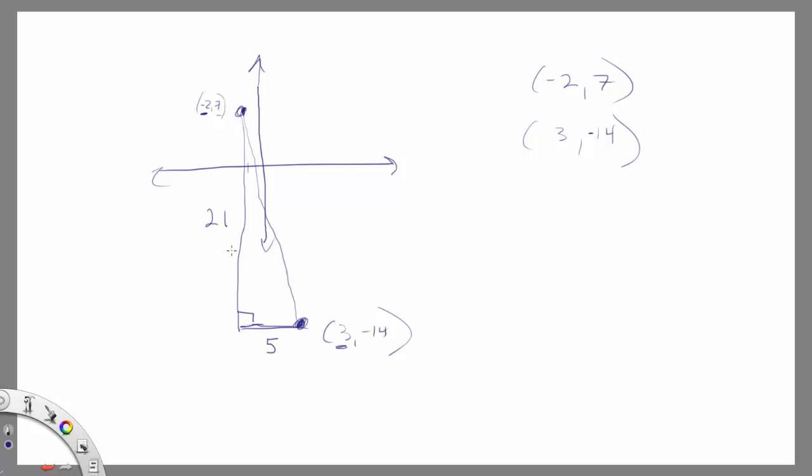So that looks like it's going to be a y direction of 21. Now to get the distance, the thing I asked you for initially, all we really have to do is do the Pythagorean theorem. So remember the Pythagorean theorem for right triangle: it's a² + b² = c², those are the legs, and c is the hypotenuse.